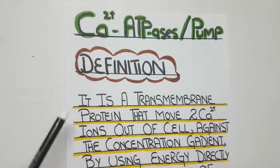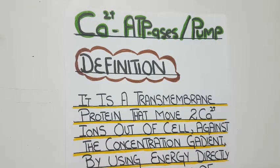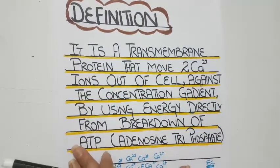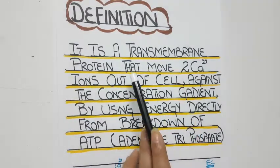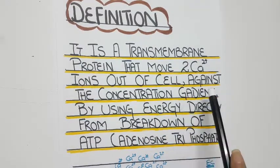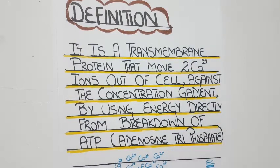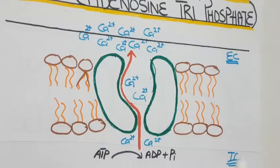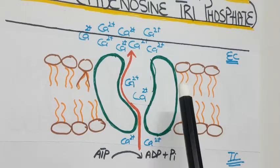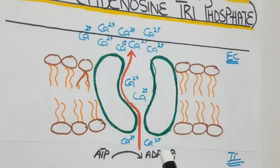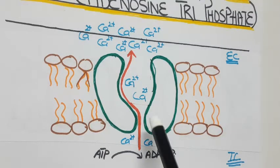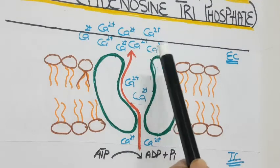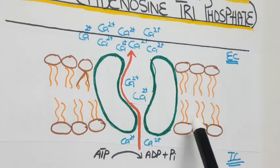Calcium ATPase is defined as a transmembrane protein that moves two calcium ions out of the cell against the concentration gradient by using energy directly from the breakdown of ATP. This is a general diagram showing the lipid bilayer and the calcium pump, depicting the transport of two calcium ions from intracellular to extracellular space against the concentration gradient and by utilizing energy from the breakdown of ATP.